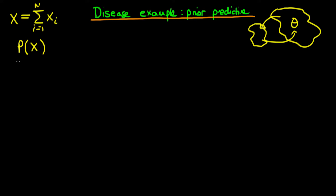P(x) is what we're going to call our prior predictive distribution — the values of x we would expect to get in our sample of size n before we actually observe our data. We can obtain this prior predictive distribution by integrating out across all values of theta, which ranges from 0 to 1, over the joint probability of x and theta.